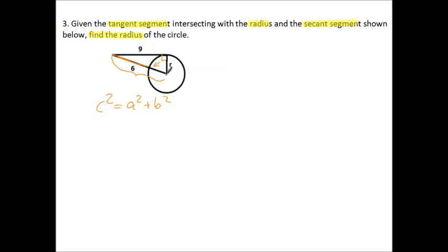And the piece that's here on the inside is another radius, of course, R. So our hypotenuse is really 6 plus R units long. 6 plus R squared is equal to 9 squared plus R squared.